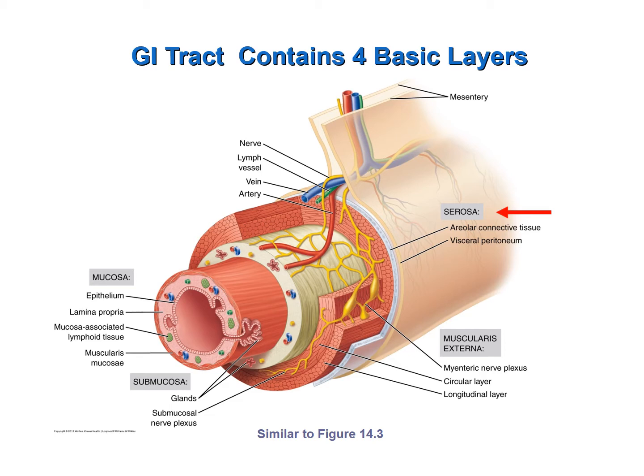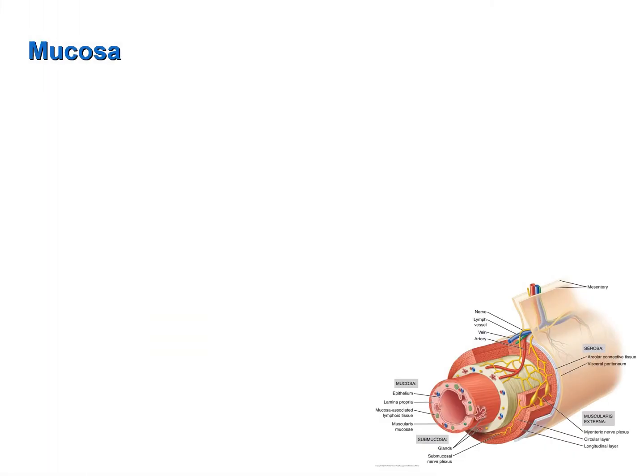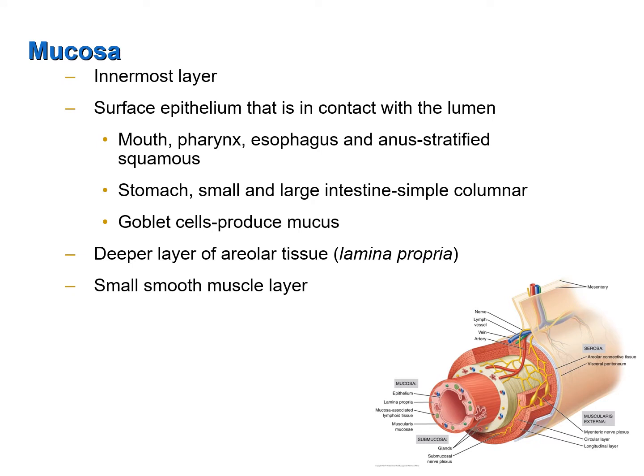Let's briefly discuss each of these layers, starting with the mucosa. The mucosa is the innermost layer of the GI tract. It is an epithelial membrane, meaning that it consists of a layer of surface epithelium supported by a deeper layer of connective tissue — areolar tissue — specifically known as the lamina propria.